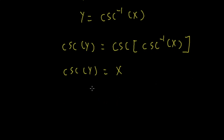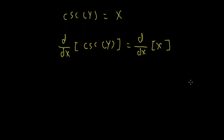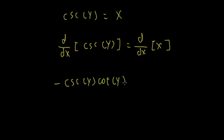Now I will take the derivative of both sides with respect to x. Since we are taking the derivative of y with respect to x on the left side, the derivative of cosecant y is negative cosecant y cotangent y. However, I have to multiply by dy over dx. On the right side, the derivative of x with respect to x is just 1.